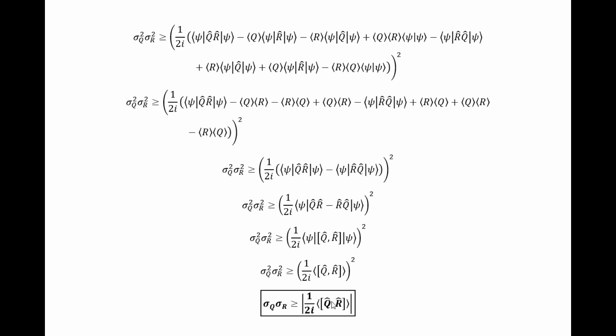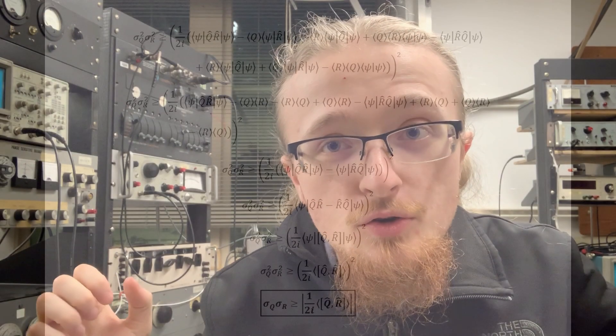And that is how you derive the absolutely beautiful generalized Heisenberg uncertainty relation. Now, you have seen the awesomeness of not just the generalized Heisenberg uncertainty principle, but the epicness of how easy and straightforward and satisfying it is to derive.